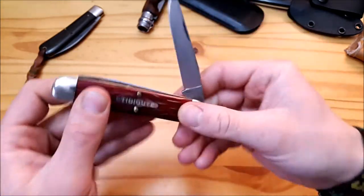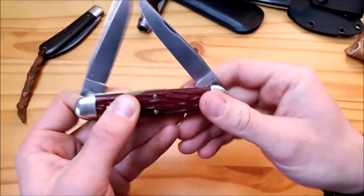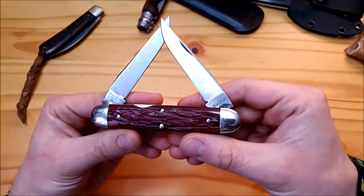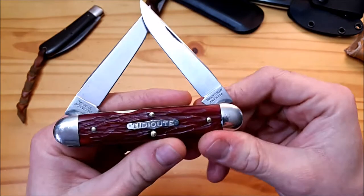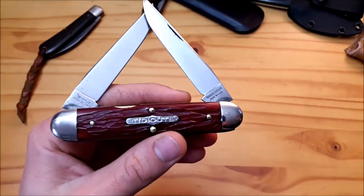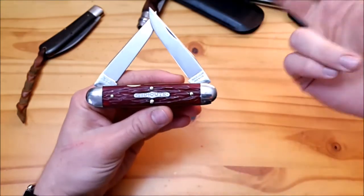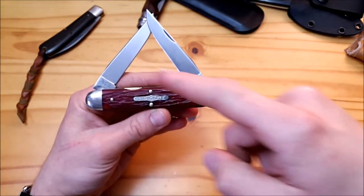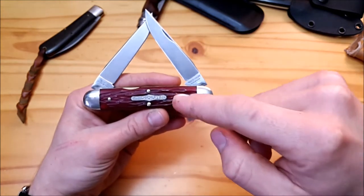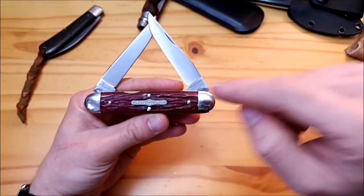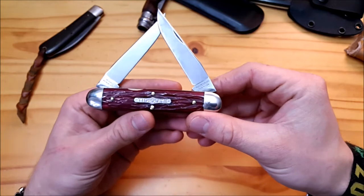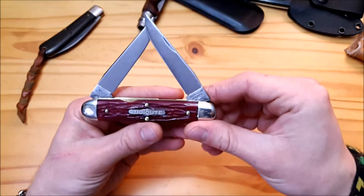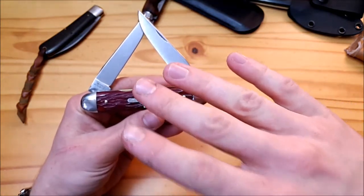Number 53 muskrat, a large cigar pattern with cherry red jig bone covers and two identical muskrat clip point blades. This is kind of unique because such redundancy in blades is not something you see very often in traditional pocket knives. In stockmans or moose patterns you usually have two different blade styles, but this specific knife has two identical clip point blades.